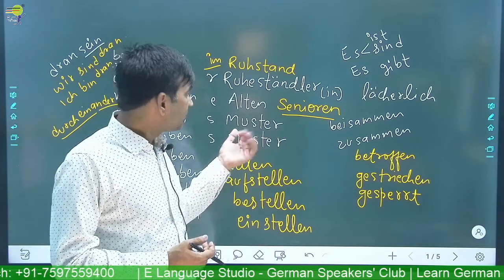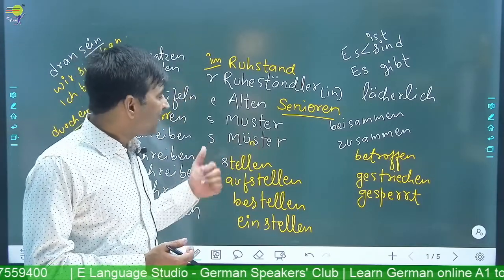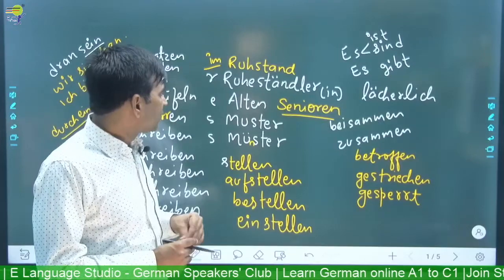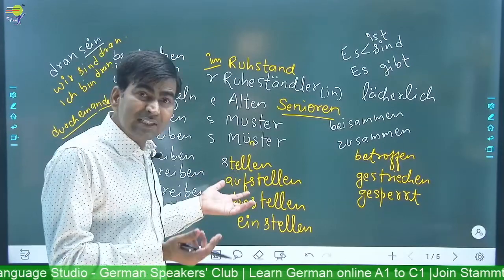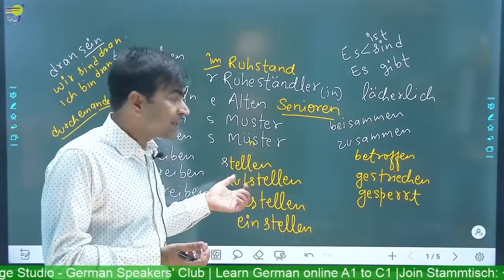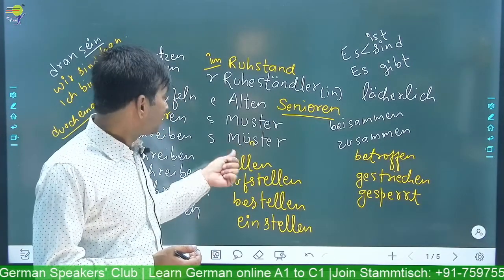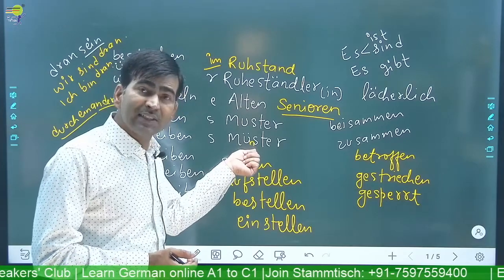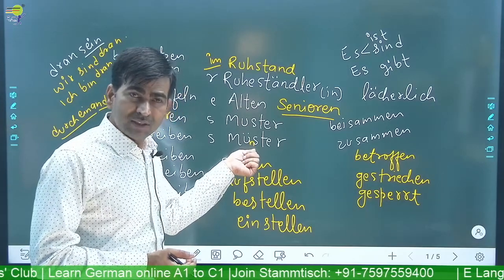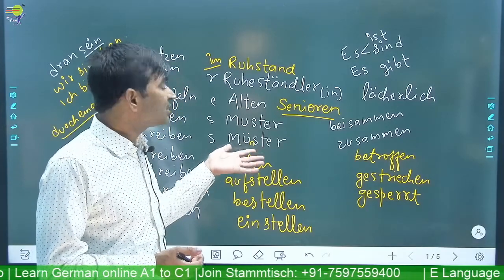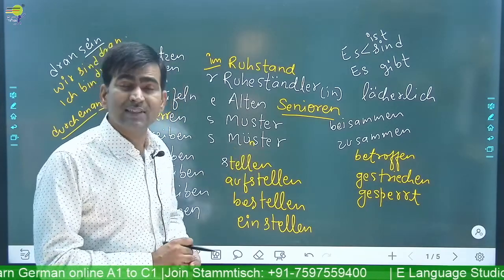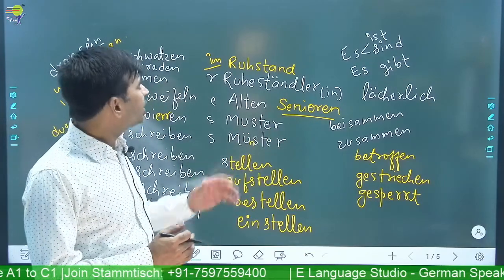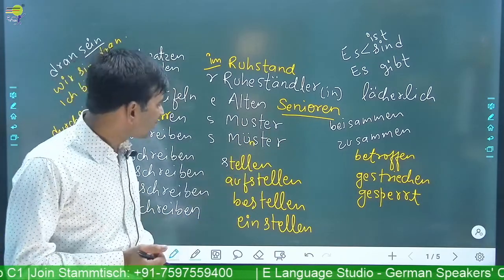Beispiel hai — pattern, model test paper jisko bolte hain, so that is Musterblätter. Münster is a city in Germany, but Münster also means cathedral — bada church jo hai usko bhi Münster bolte hain.